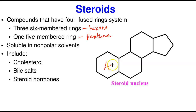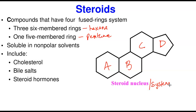This is A, the first hexane ring, fused with another one B, then C, the third one, and then you have the pentane as D. This is what we call the typical structure of the steroid nucleus. Just like lipids, they are soluble in nonpolar solvents like diethyl ether or chloroform, but insoluble in water, which is a polar solvent.